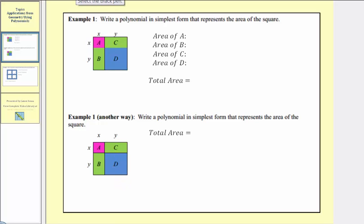For the first method, to find the total area, we'll find the area of this small square a, then we'll find the area of rectangle b, and then we'll find the area of rectangle c, and finally the area of rectangle d. Then we'll find the sum of these four areas to determine the total area.